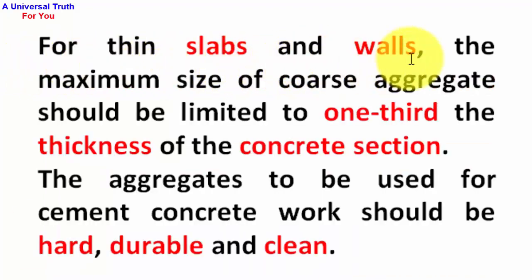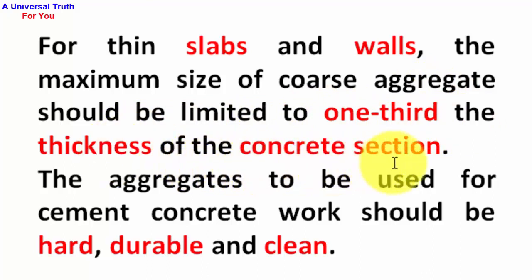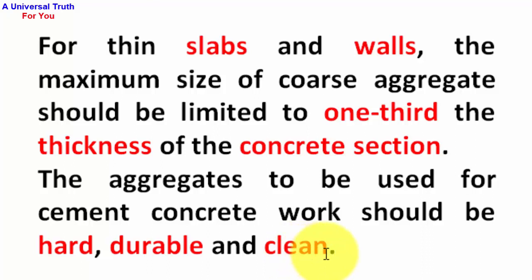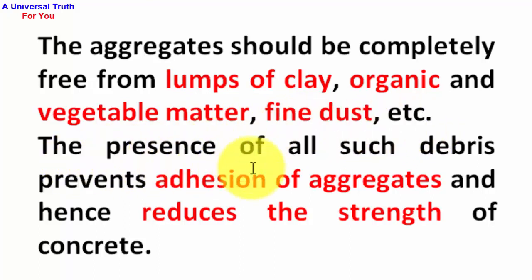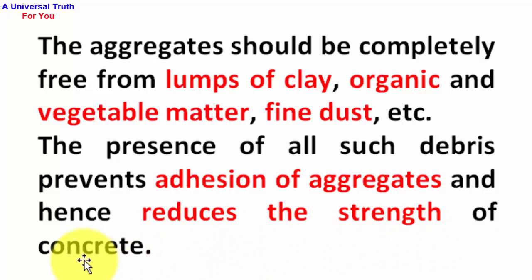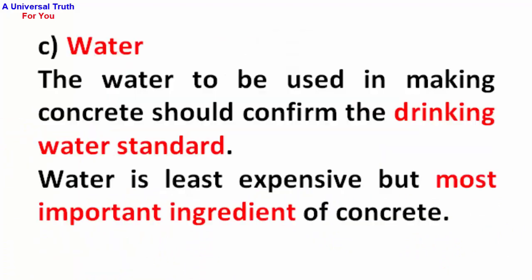For thin slabs and walls, the maximum size of coarse aggregate should be limited to one-third the thickness of the concrete section. Aggregates used for cement concrete work should be hard, durable, and clean — completely free from lumps of clay, organic and vegetable matter, and fine dust. The presence of such debris prevents proper bonding of aggregates and hence reduces the strength of concrete.